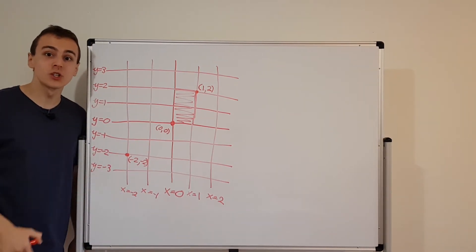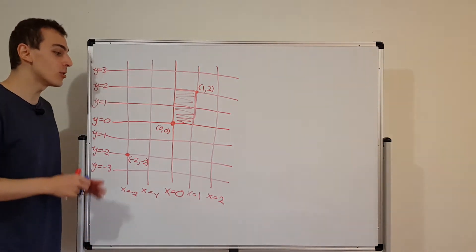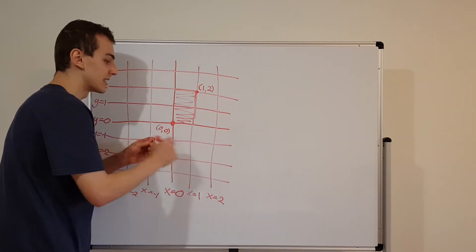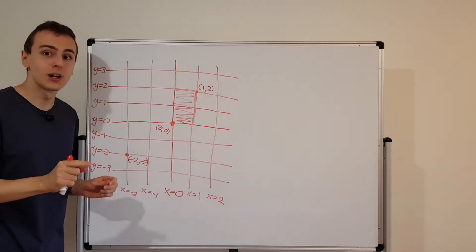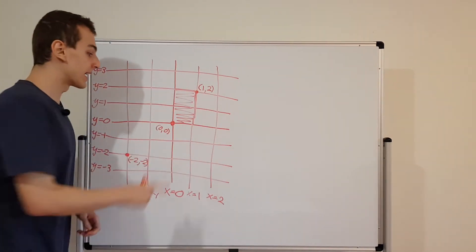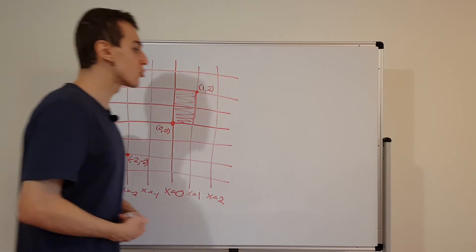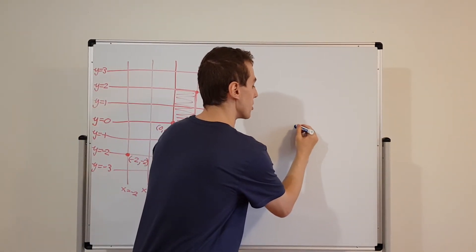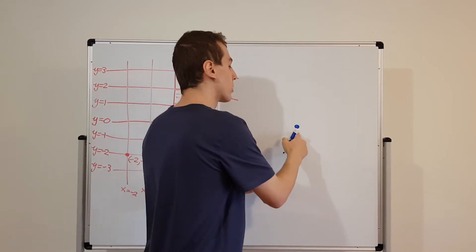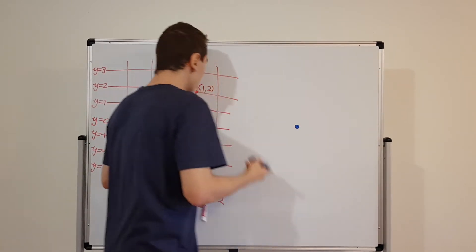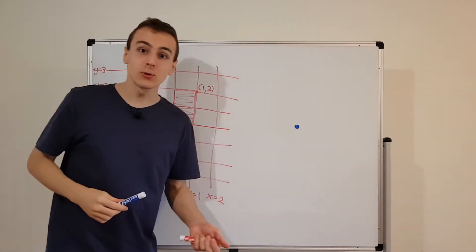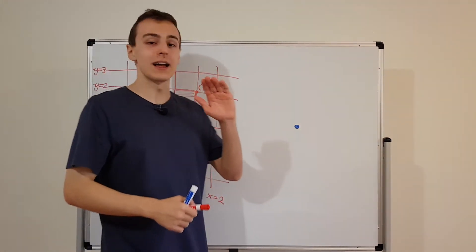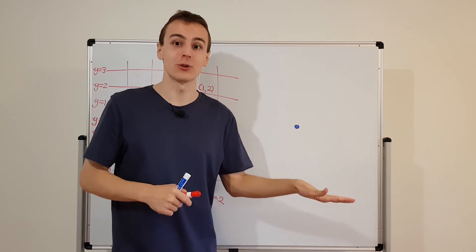Now we're going to move on to the polar coordinate system, which is a little different because it doesn't give you two numbers that are displacements — it gives you an angle and a radial distance. Again, we're going to start from the origin. I'm going to draw the origin here, and we're going to use two numbers that are not x and y: the radial distance from the origin and the angle away from some direction we assign to be zero.